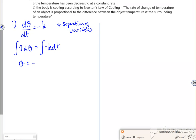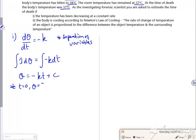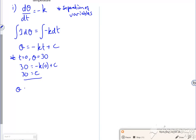So that becomes θ is minus kt plus C. Now I know that when t is zero, θ is 30. So 30 is minus k(0) plus C. So C is 30.